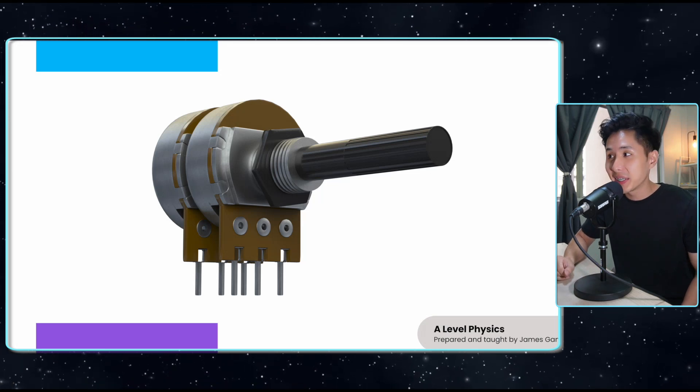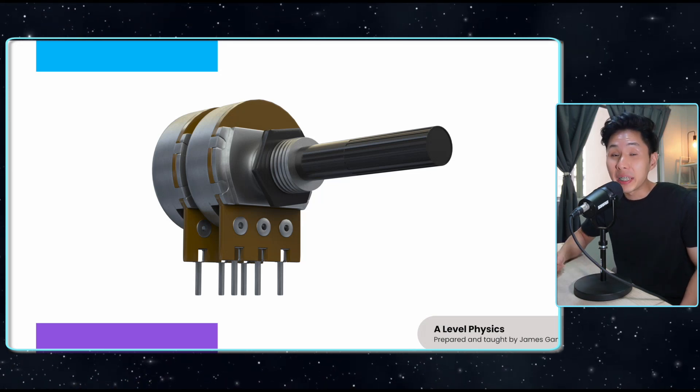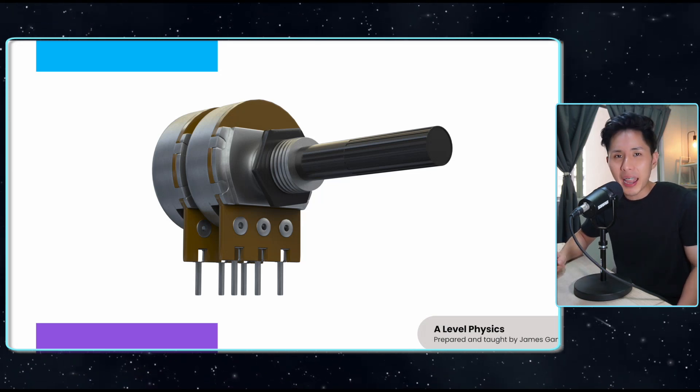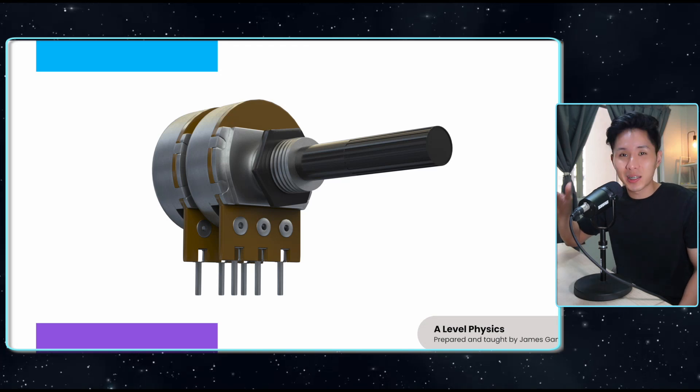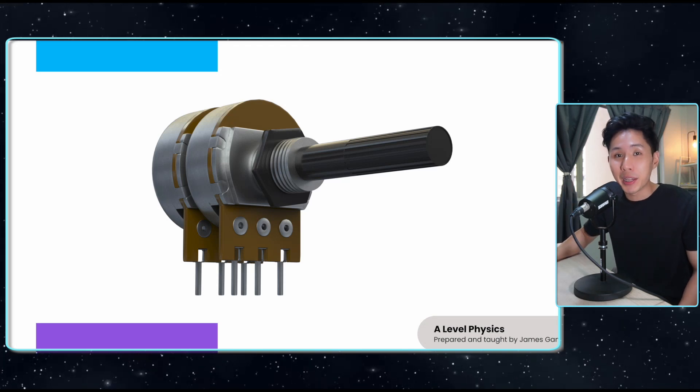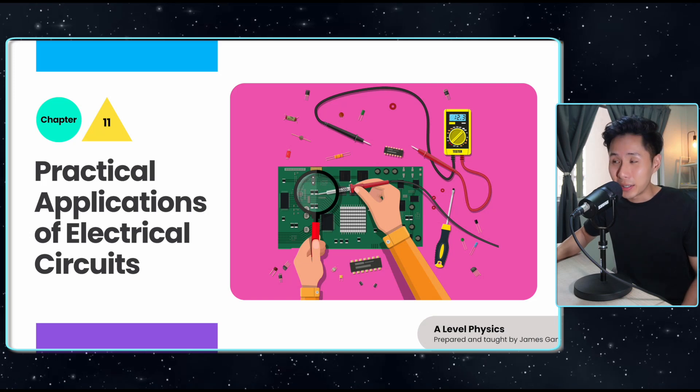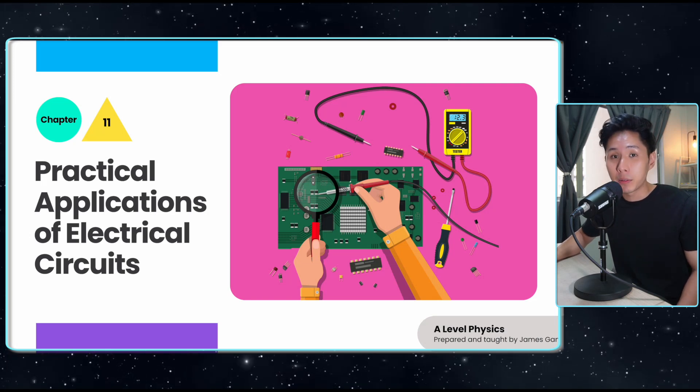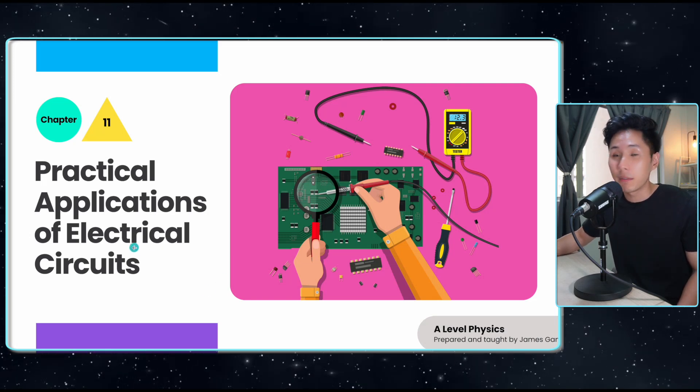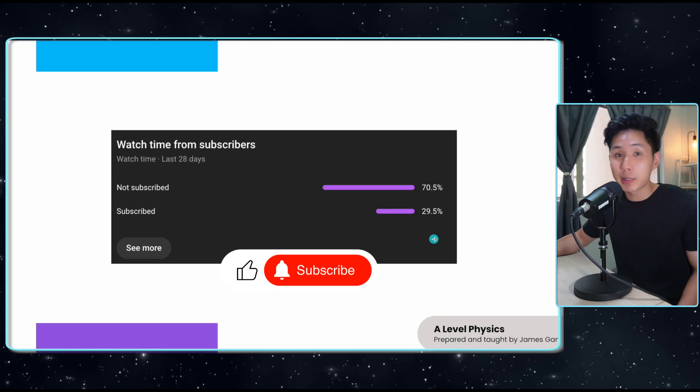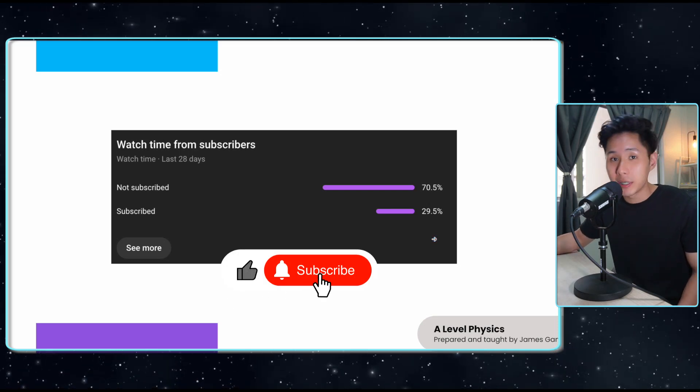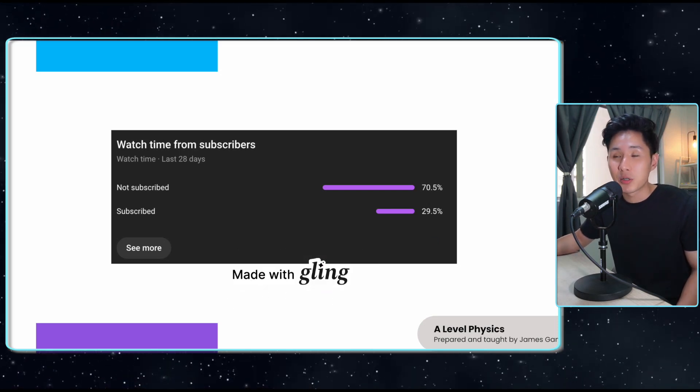Hello everyone, welcome back to this channel. By looking at this image, you might be thinking that I'm going to talk about Canon, but that's not the case. This is actually a potentiometer, which is something we're going to learn in the video. Today we're going to look into chapter 11 of A-level physics: practical applications of electrical circuits. Before that, I just want to remind you that you can subscribe to this channel. Thank you so much.